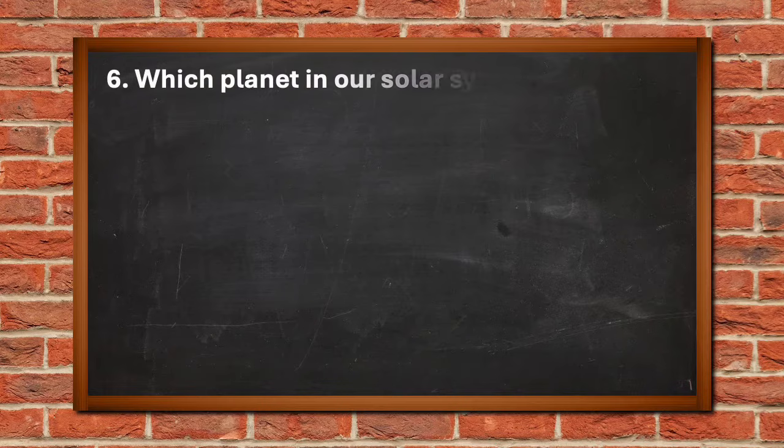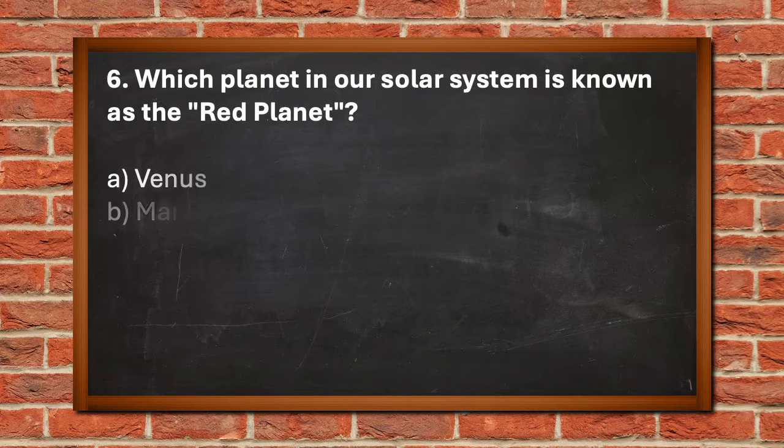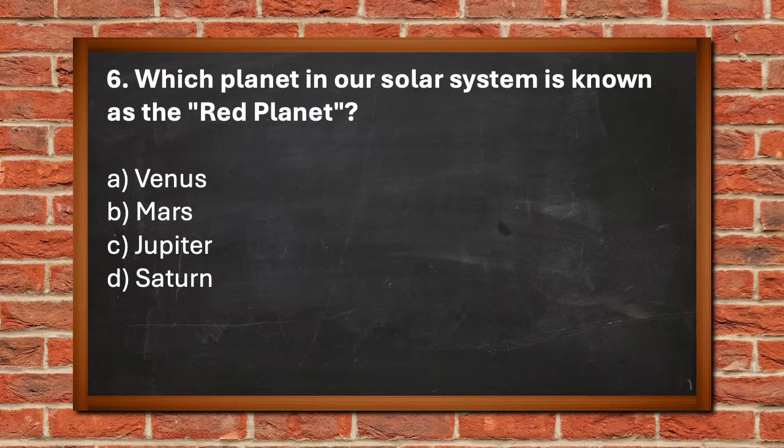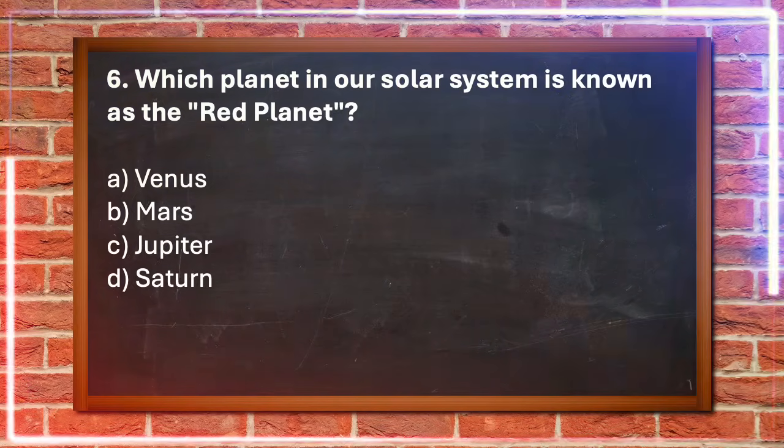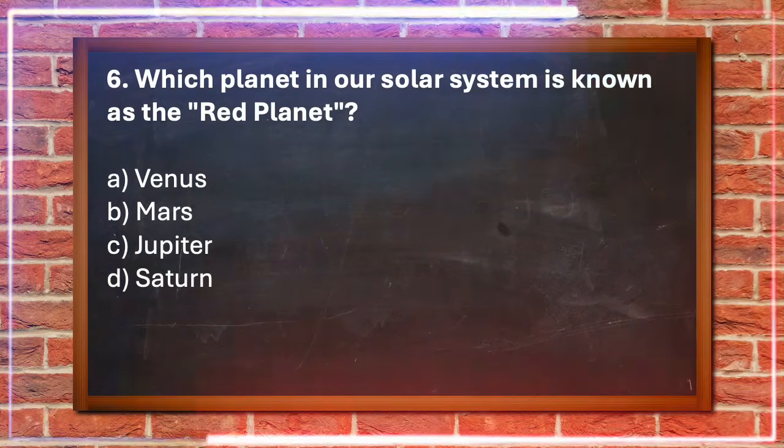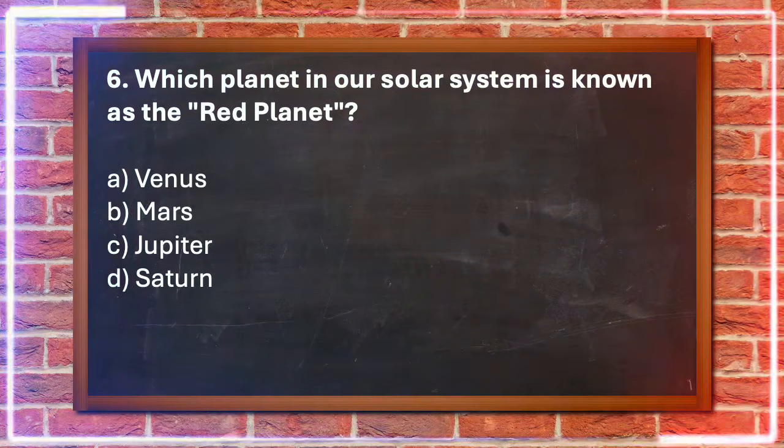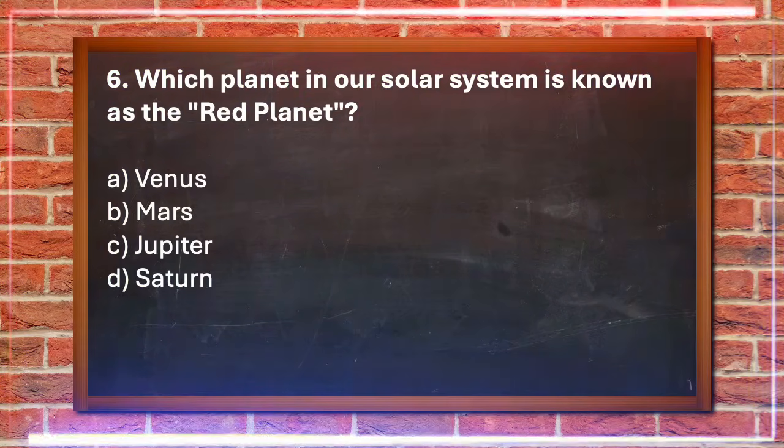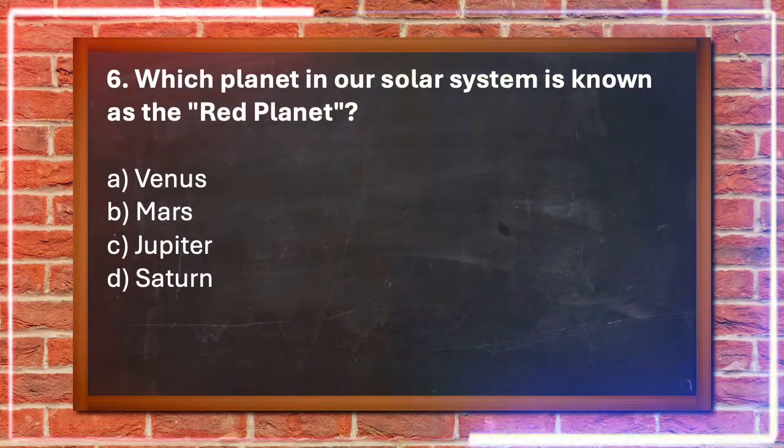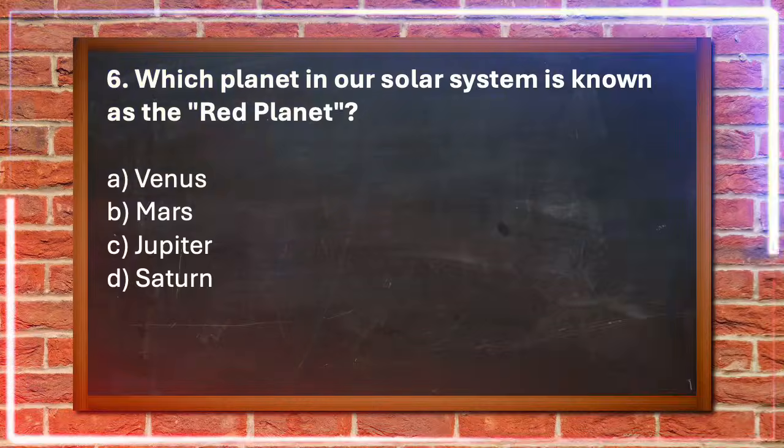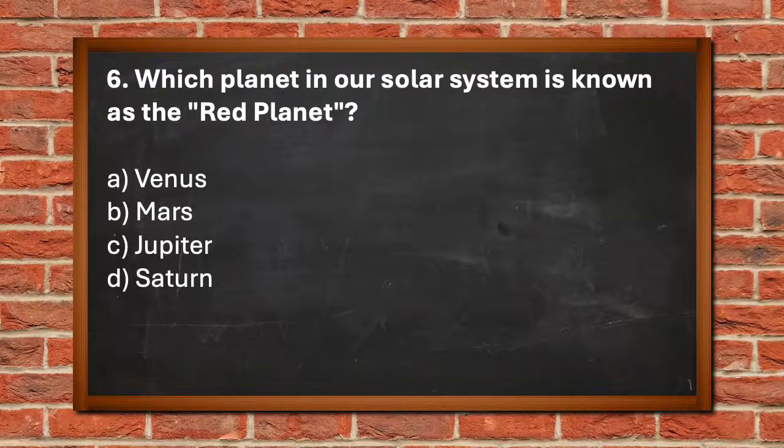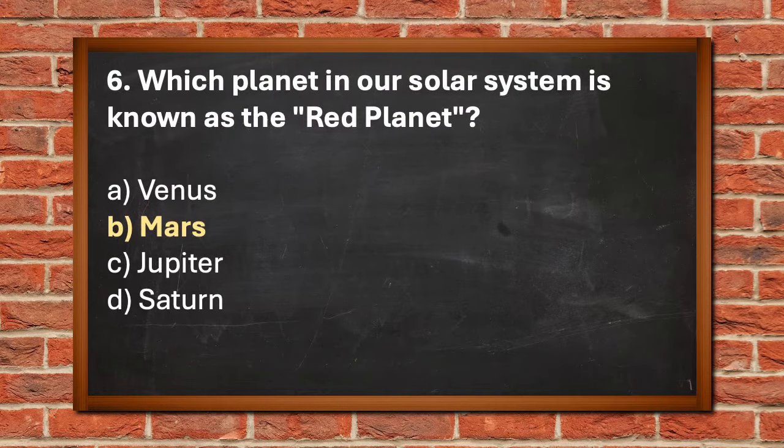Number 6. Which planet in our solar system is known as the Red Planet? A. Venus, B. Mars, C. Jupiter, D. Saturn. The answer is B. Mars.